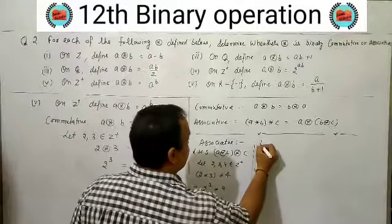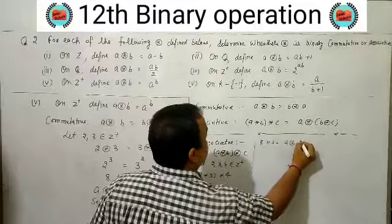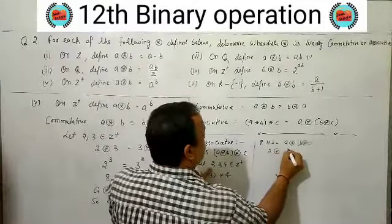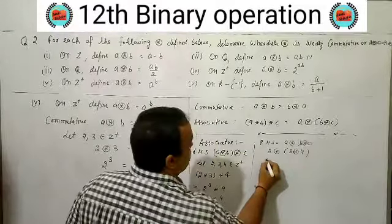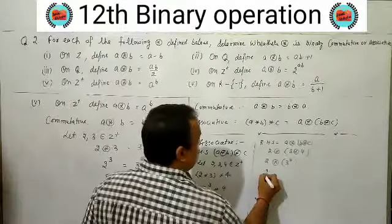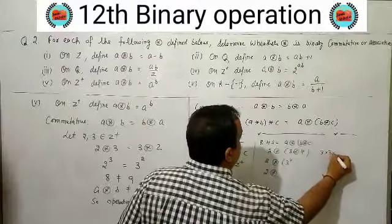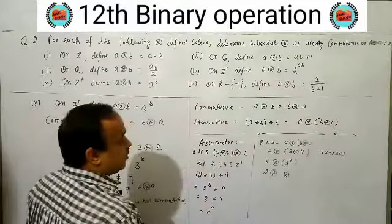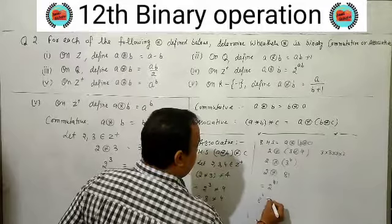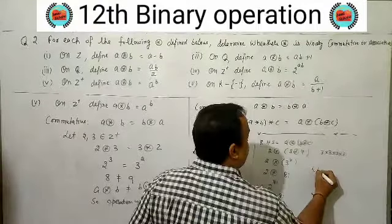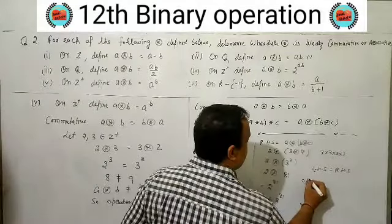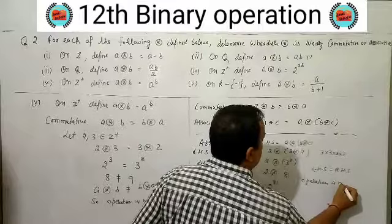Right hand side: A★(B★C) = 2★(3★4) = 2★(3^4) = 2★81 = 2^81. Left side is 8^4 and right side is 2^81, which are not equal. So the operation is not associative. Thus a★b = a^b is neither commutative nor associative.